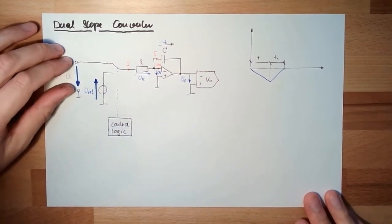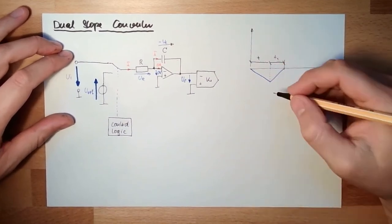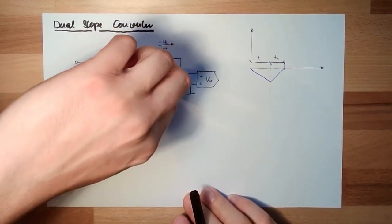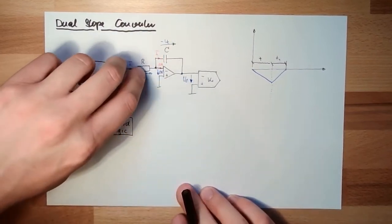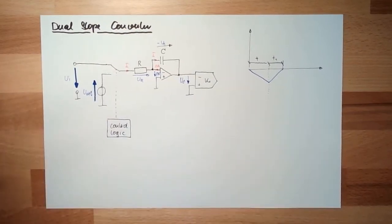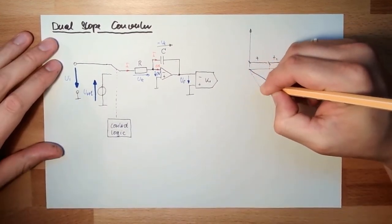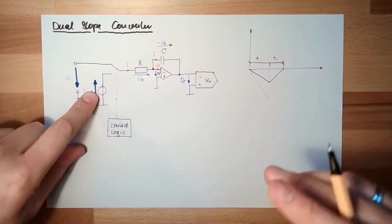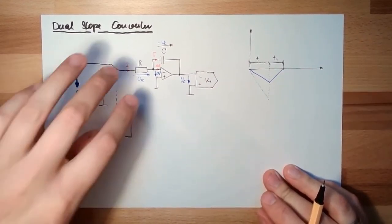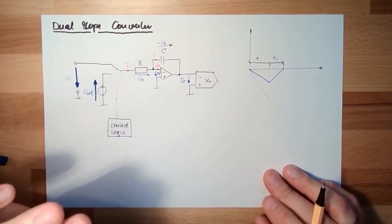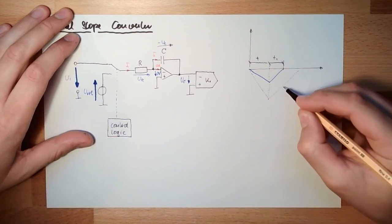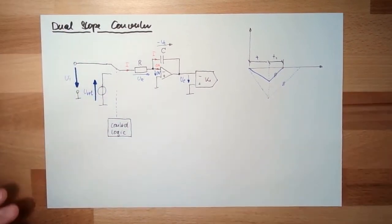If the input voltage was higher, bigger, then we would have charged the capacitor more, because if we have here higher voltage, more current is running through the resistor, more current is charging the capacitor. This means this would go faster. And after the time T, the control logic is again switching to the reference voltage. The reference voltage has not changed. This means the current uncharging the capacitor is still the same.